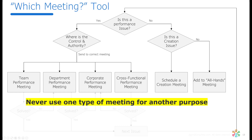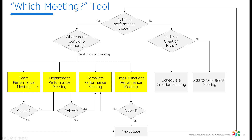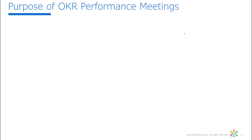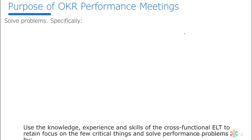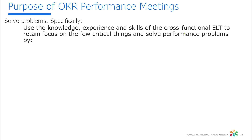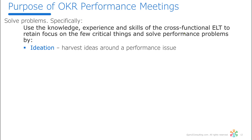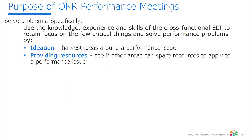Since our primary topic is OKR performance meetings, let's focus on what's unique about them. What we're trying to do is solve problems — specifically, get a group of people with the knowledge, expertise, and skills to focus clearly on a few critical things that need to get solved. Typically, there are only four or five topics that come up. The first is problems that require ideas: your team has done everything they can but hasn't been able to solve it, so you bring it to a broader audience.